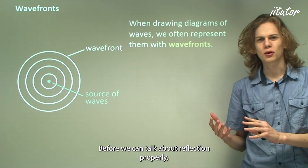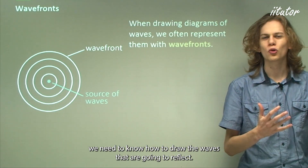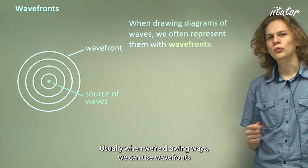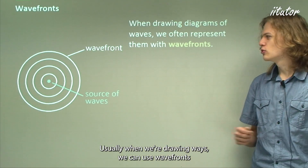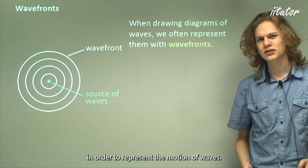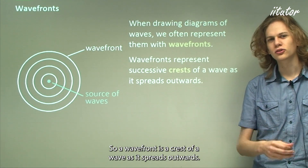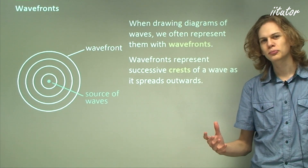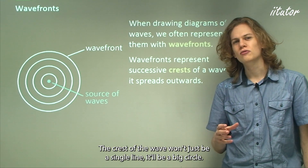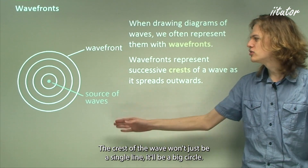Before we can talk about reflection properly we need to know how to draw the waves that are going to reflect. Usually when we're drawing waves we can use wavefronts in order to represent the motion of waves. A wavefront is a crest of a wave as it spreads outwards. In a two-dimensional wave the crest of the wave won't just be a single line — it'll be a big circle.